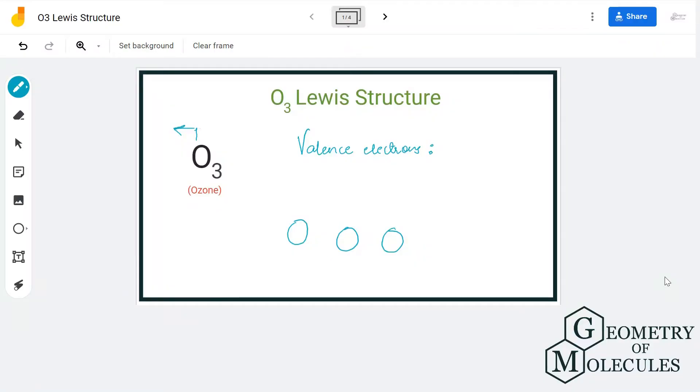Hi guys, today in this video we are going to look at the Lewis structure for O3 molecule. It's the chemical formula for ozone and it is made up of three oxygen atoms.